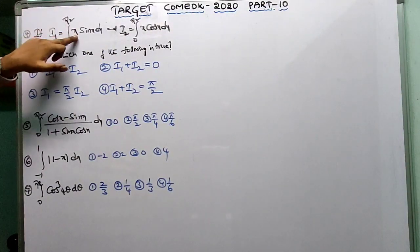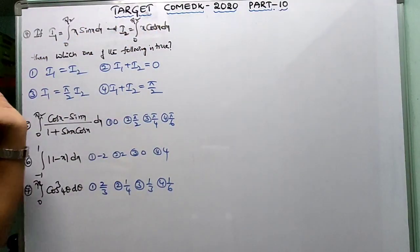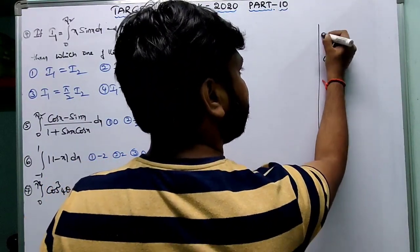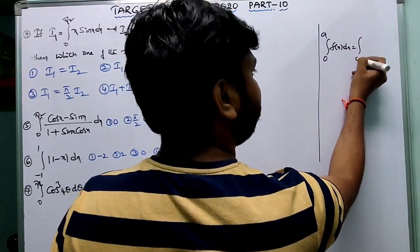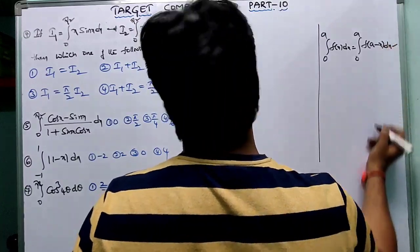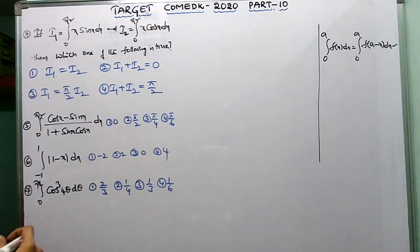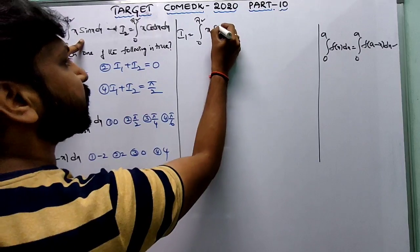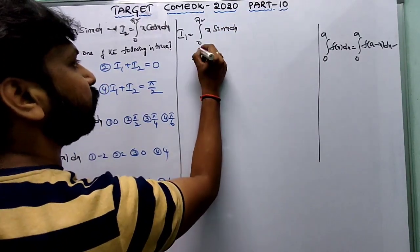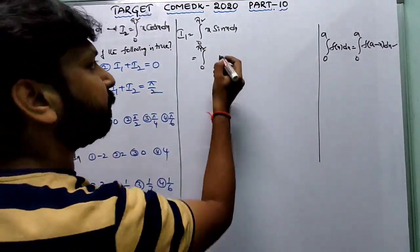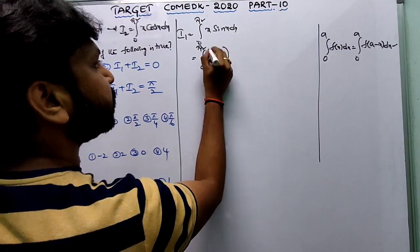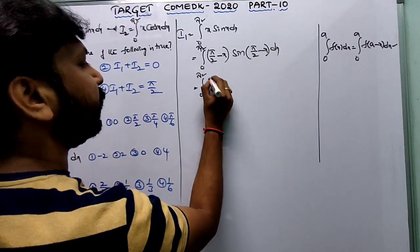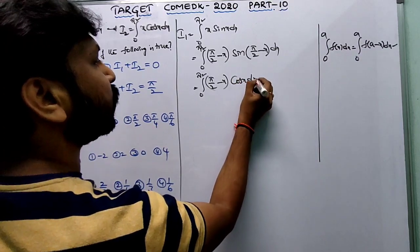Next question: I1 = integral from 0 to π/2 of x·sin x dx and I2 = integral from 0 to π/2 of x·cos x dx — which of the following is true? Applying the property — integral from 0 to a of f(x) dx equals integral from 0 to a of f(a minus x) dx — to I1: substitute (π/2 minus x) to get integral of (π/2 minus x)·sin(π/2 minus x) dx = integral of (π/2 minus x)·cos x dx.